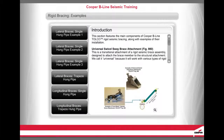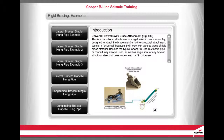This section features the main components of Cooper B-Line Tolco rigid seismic bracing. The Universal Swivel Sway Brace Attachment, Figure 980, is a transitional attachment of a rigid seismic brace assembly designed to attach the brace member to the structural attachment. It is called universal because it works with various types of rigid brace material — besides the typical Cooper B-Line B22 strut, pipe, conduit, angle iron, or structural steel not exceeding one-quarter inch thickness may also be used.